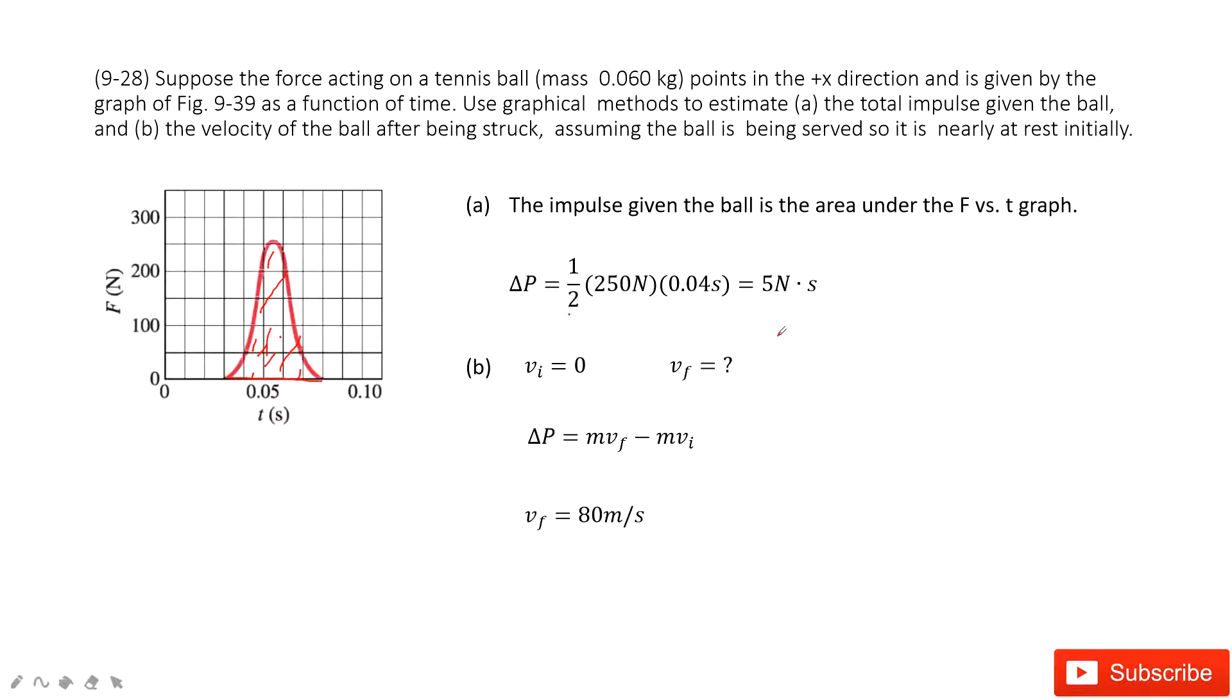The next one, we need to find the final velocity. If we know the initial velocity is zero, stationary. So as we learned, the impulse is just equal to change of the momentum.